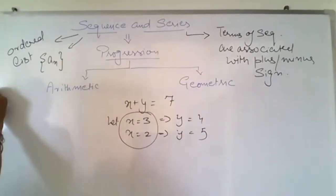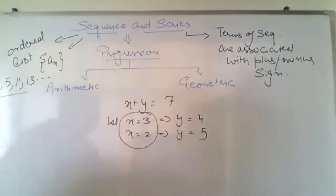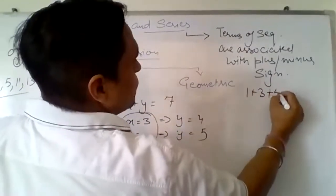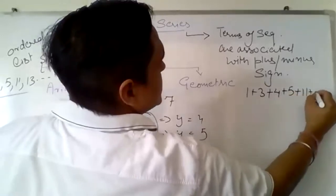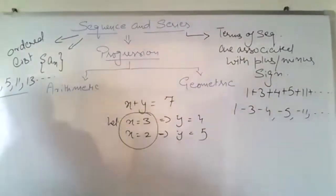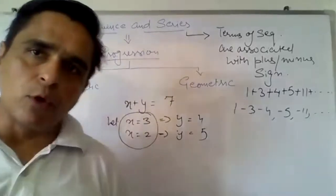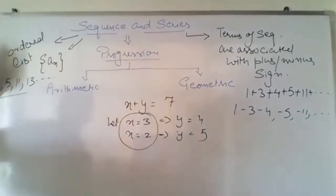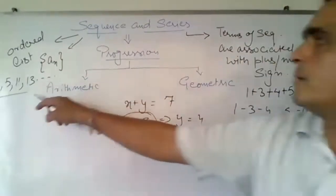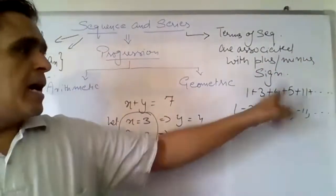For example, consider 1, 3, 4, 5, 11, 13 and so on — if we write numbers separated by commas, it is called a sequence. But if we write 1 + 3 + 4 + 5 + 11 + ... or 1 − 3 − 4 − 5 − 11 − ..., then that is known as a series. So the difference is: a sequence is an ordered list, but if we connect the terms with plus or minus signs, those sequences become series.